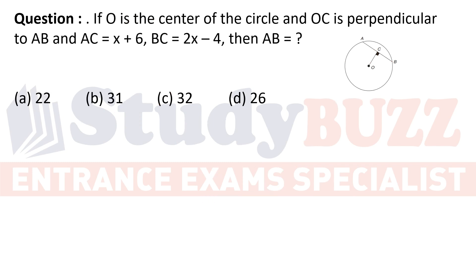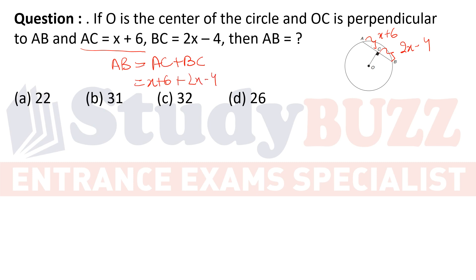Next question: O is the center of the circle and OC is perpendicular to AB. AC = x + 6 and BC = 2x − 4. AB equals AC + BC, which is (x + 6) + (2x − 4) = 3x + 2.